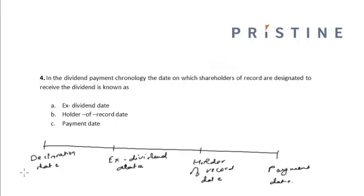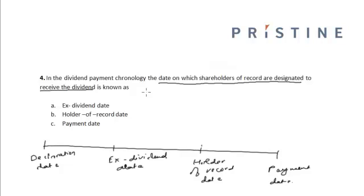The declaration date is the date on which the company declares that dividends will be paid to its shareholders. The ex-dividend date is the last cut-off date for receiving the dividend. The holder of record date is the date on which the shareholders of record are designated to receive the dividend. The payment date is the date on which the actual payment of dividends to the shareholders is made.